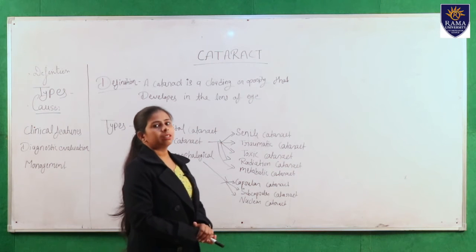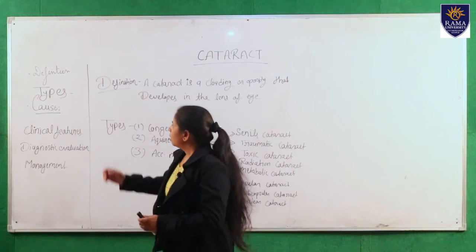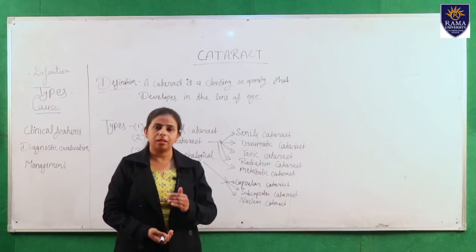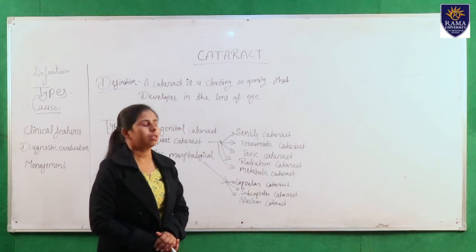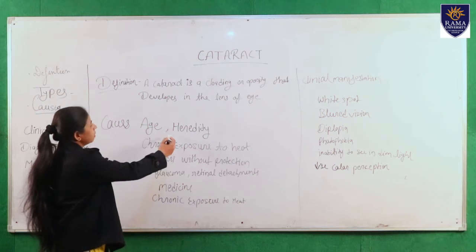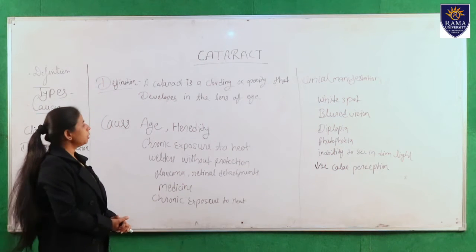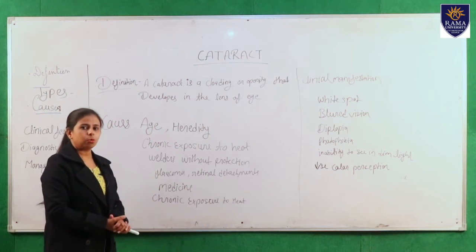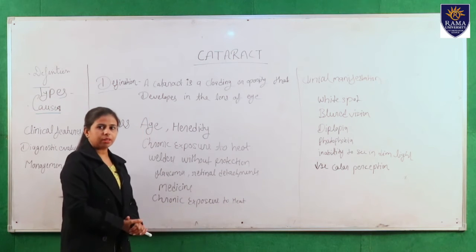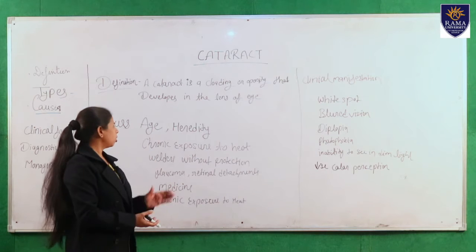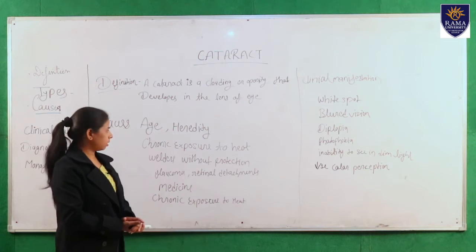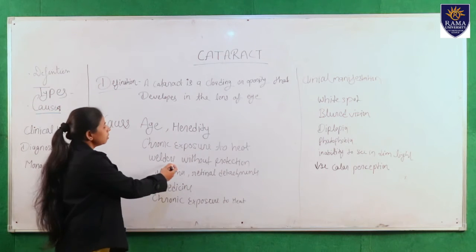Next I will discuss about causes of cataract. Many causes are responsible for cataract. One is heredity — cataract can pass from one generation to another generation. Another cause is chronic exposure to heat. If any person, such as welders working without protective glasses, comes in contact with heat, they can suffer from cataract.